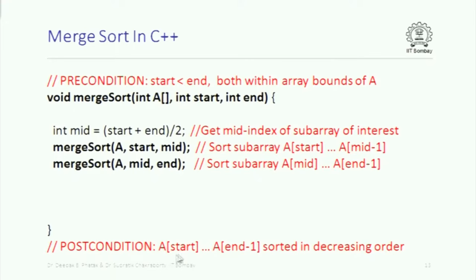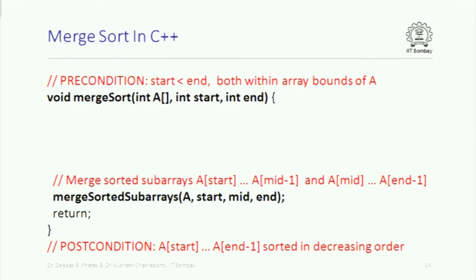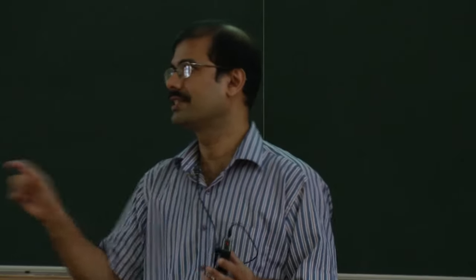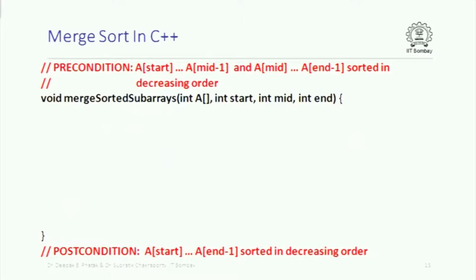The two parts are: the array from start to mid minus 1, and the array from mid to N minus 1. We recursively call merge sort on each — that is what we decided last time. Then we call merge sorted subarrays to merge the two sorted subarrays. Instead of passing two separate arrays, we pass one array and give the ranges of indices between which the two subarrays exist.